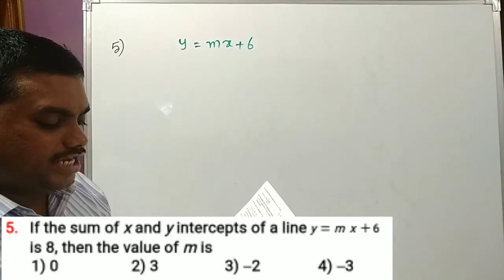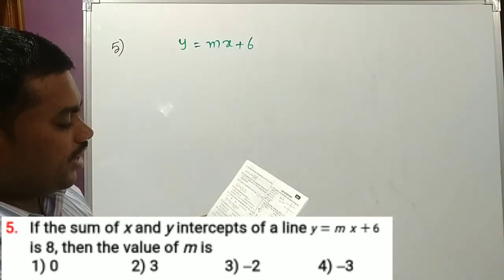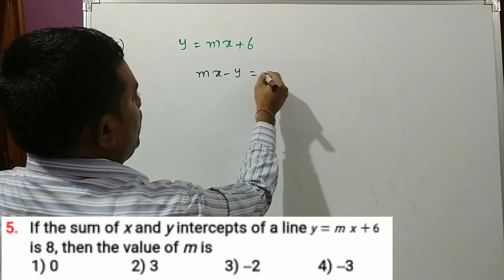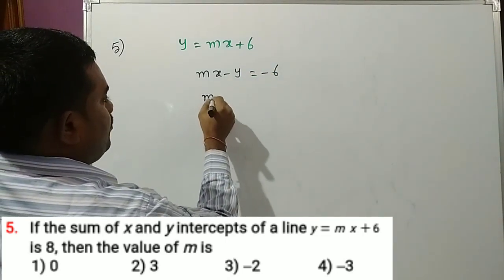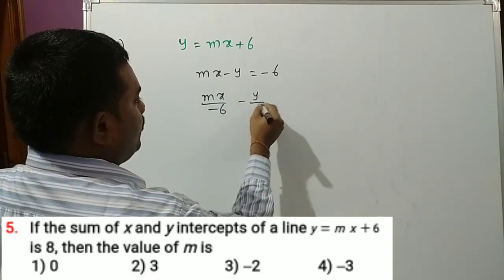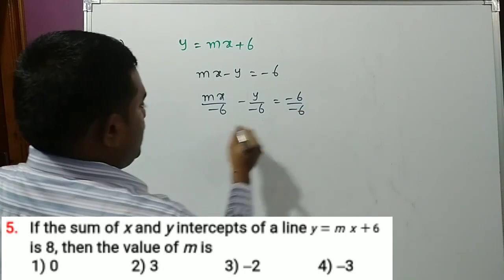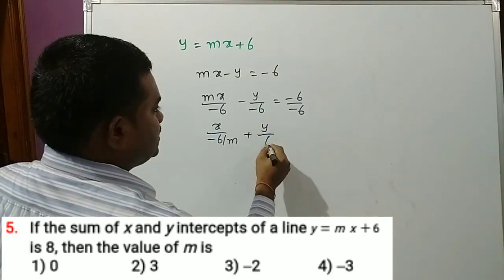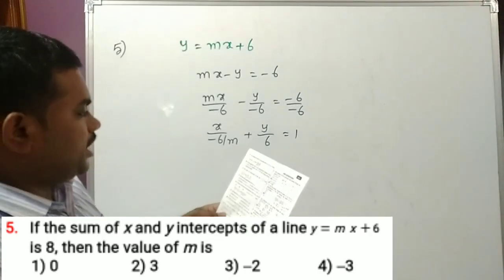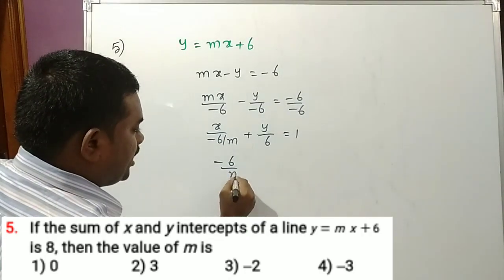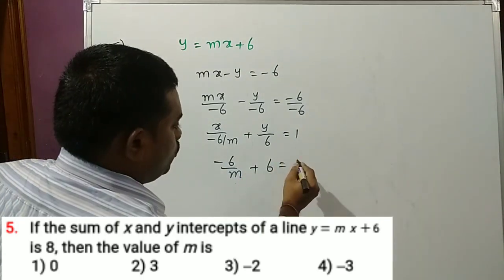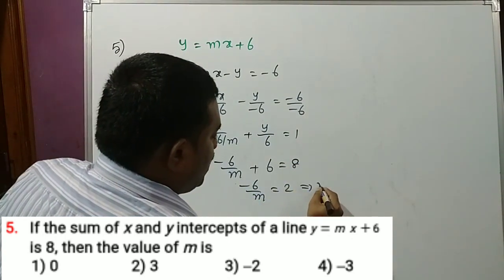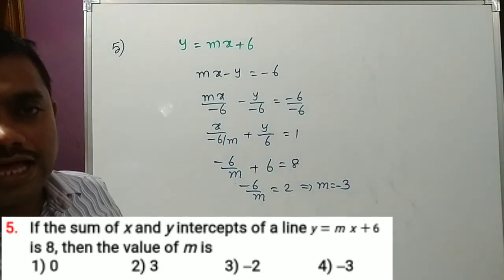Question 5: If the sum of the x and y intercepts of the line y equals mx plus 6 is 8, find m. Converting to intercept form: mx minus y equals minus 6, divided by minus 6 gives x/(minus 6/m) plus y/6 equals 1. So x-intercept is minus 6/m and y-intercept is 6, and their sum is 8. Thus minus 6/m equals 2, giving m equals minus 3. Option 4 is the correct answer.